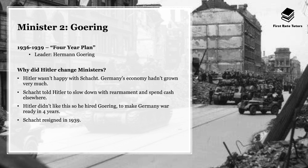Hitler didn't have a lot of satisfaction with the results that Schacht delivered, so Schacht ended up resigning. Hermann Goering took over as the second minister looking after economic policies. He implemented from 1936 to 1939 the Four-Year Plan. Hitler wasn't happy with Schacht because Germany's economy hadn't grown very much, and Schacht had also told Hitler to slow down when it came to rearming and spending cash elsewhere. So Hitler hired Hermann Goering to make Germany war-ready in four years. By 1936, Schacht had essentially been sidelined.